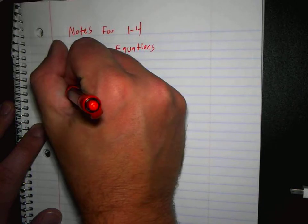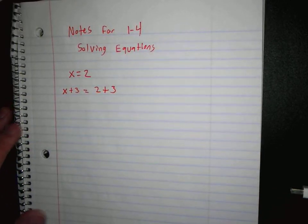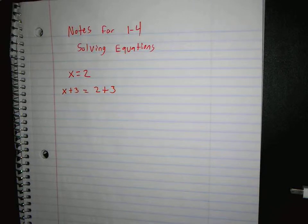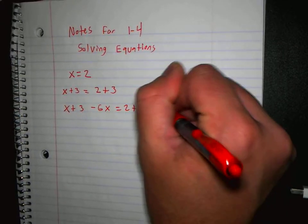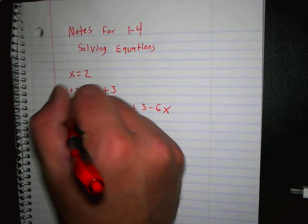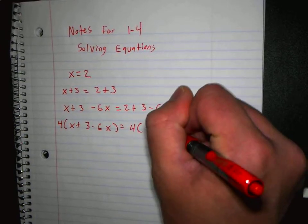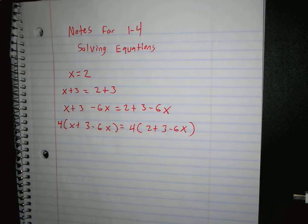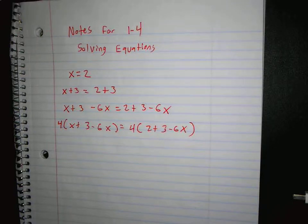So they'll say, well, let me add 2 to both sides. Or let's add 3 to both sides. And then maybe they say, let's subtract 6x from both sides. Because I did the same thing on both sides, this equation is still true. We still know the answer. The answer is x equals 2. Maybe they had parentheses out in front of this with a 4 on both sides.